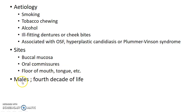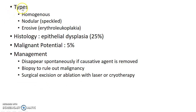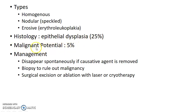Leukoplakia is more common in males and it usually presents in the fourth decade of life. There are three types of leukoplakia: homogeneous leukoplakia, nodular or speckled leukoplakia, and erosive or erythroleukoplakia. On histological examination, epithelial dysplasia is seen in 25% of cases of leukoplakia. Around 5% of leukoplakia can turn malignant — that is, the malignant potential of leukoplakia is 5% on average.